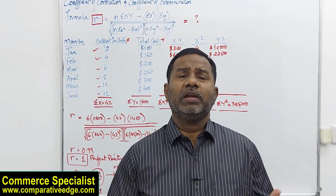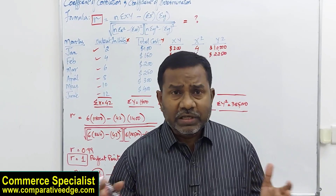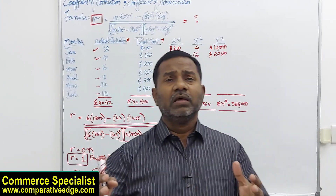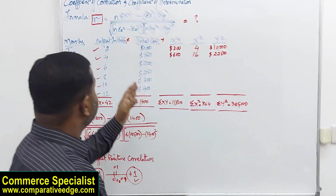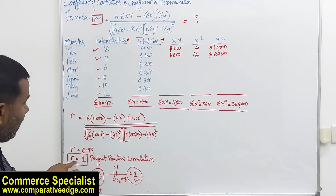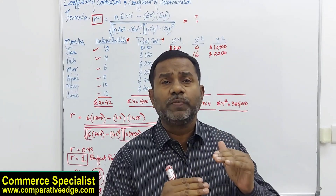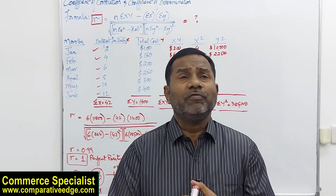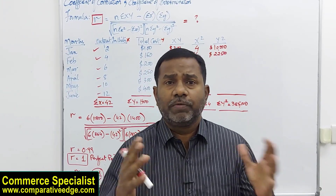This formula can be used in many ways. For example, as a marketing manager, if you want to know whether spending more on advertising would increase sales, collect historical data — say, advertising expense and corresponding sales for the last 10 months or quarters — name them x and y, plug them into the formula, and see what r tells you. If r is close to +1, the more you spend on advertising, the higher the sales.